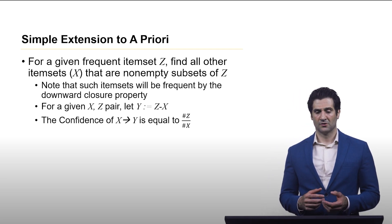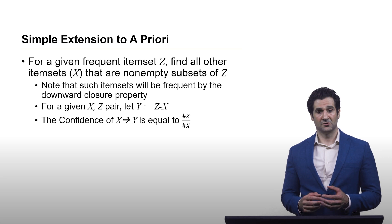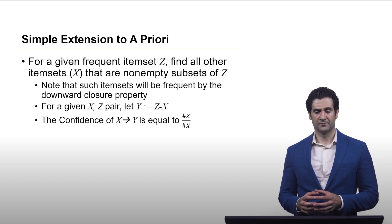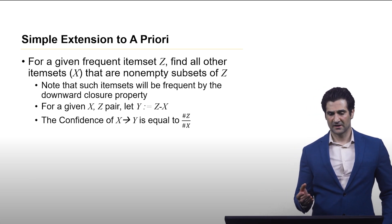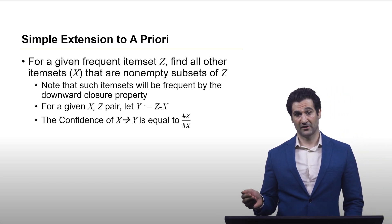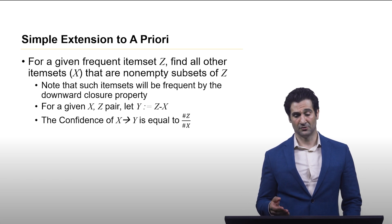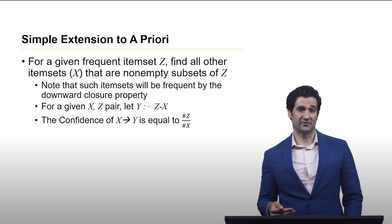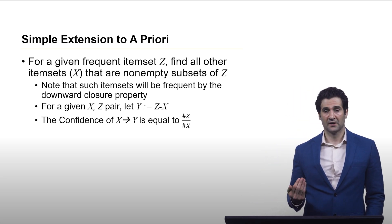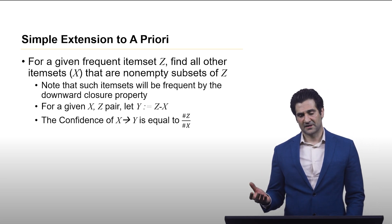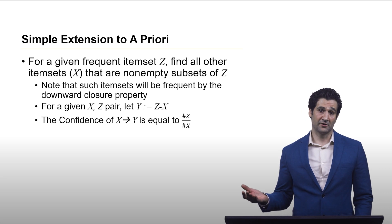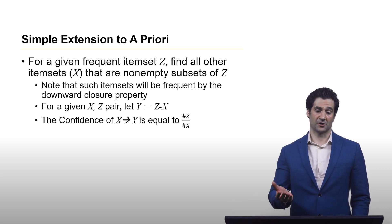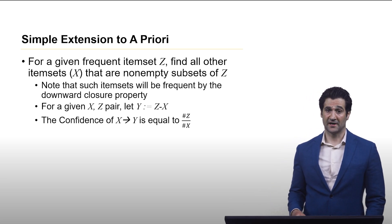And now you compute set Y, which is simply Z minus X. And now your confidence for the rule X then Y is simply equal to the support of Z divided by the support of X. Now we know, based on how we've defined support for a rule, that the rule is already going to meet the same minimum level support because Z meets that level.